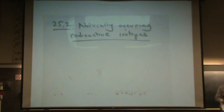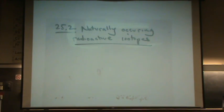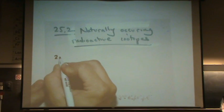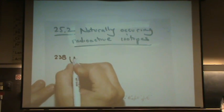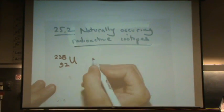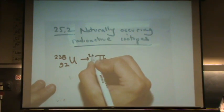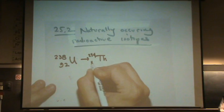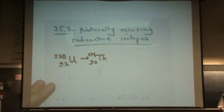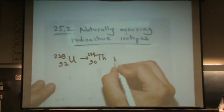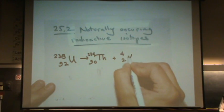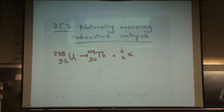Radioactive isotopes definitely can be naturally occurring. A common one that you saw before in a previous example was uranium-238. This goes down to thorium-234 and 90. So to balance this, I need an alpha particle in order to balance that reaction.